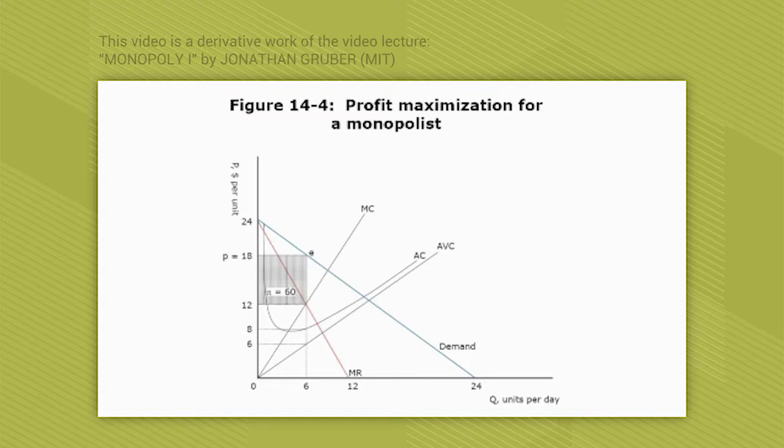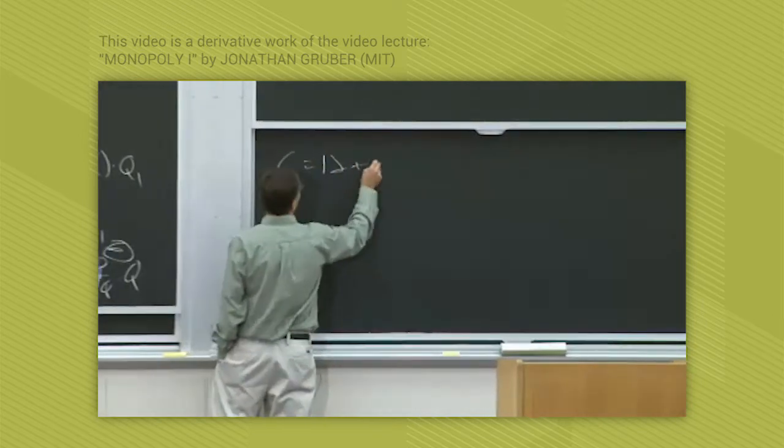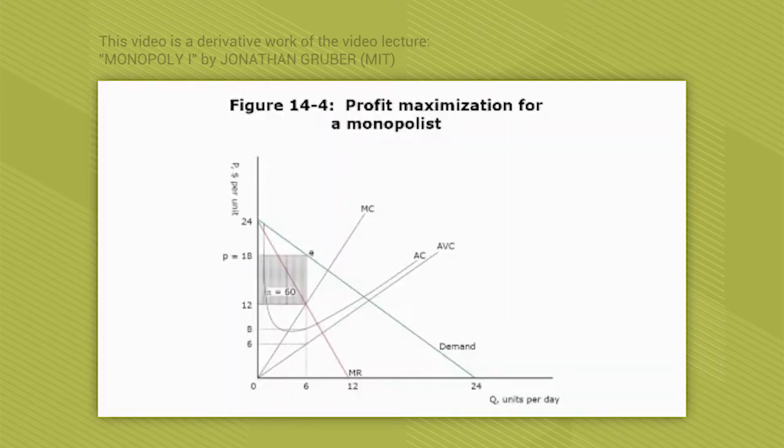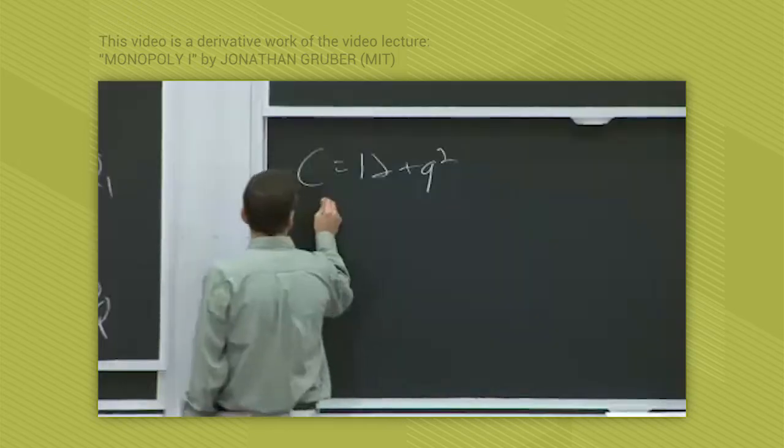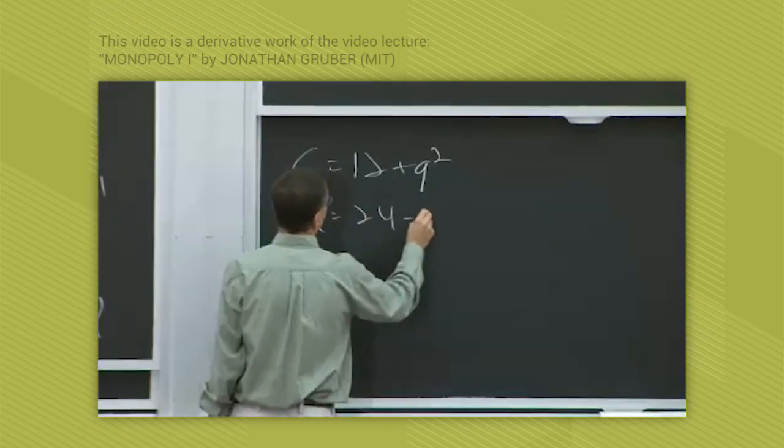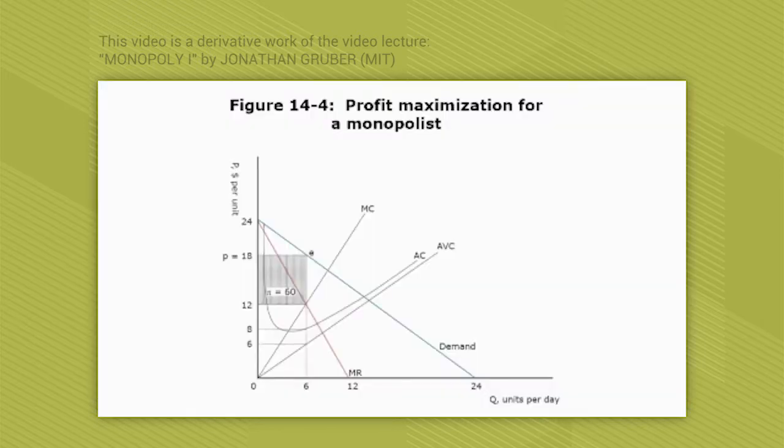This is a case where the cost function here is 12 plus q squared. So I'm doing the cost function which is 12 plus q squared. That's the cost function. And the demand function, as before, is q equals 24 minus p. So that's what's graphed here.